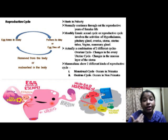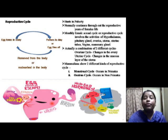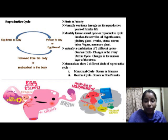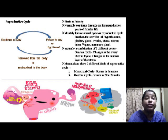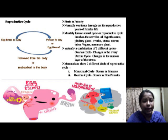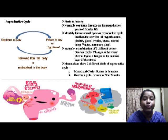The monthly female sexual and reproductive cycle involves the activities of the hypothalamus, pituitary gland, ovaries, uterus, uterine tube, vagina, and mammary gland. When thinking of the reproductive cycle, one might only think of the ovary and uterus, but many other changes occur in the female body under the influence of various hormones — in the ovary, uterus, hormone levels, vaginal epithelium, and mammary gland. The female reproductive cycle is actually a combination of the ovarian cycle and the uterine cycle.